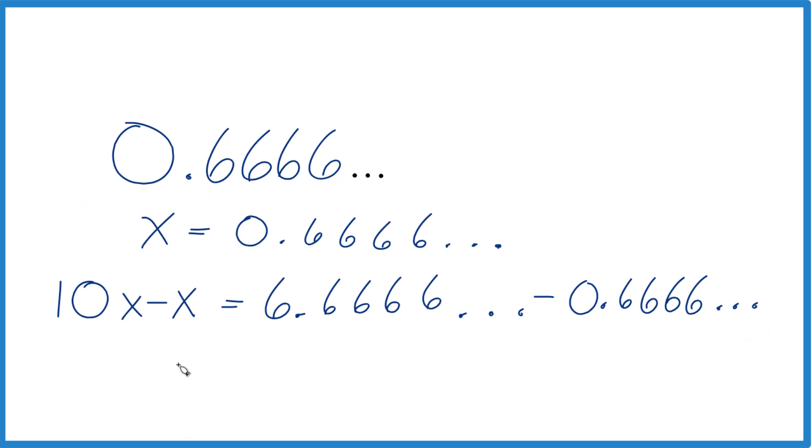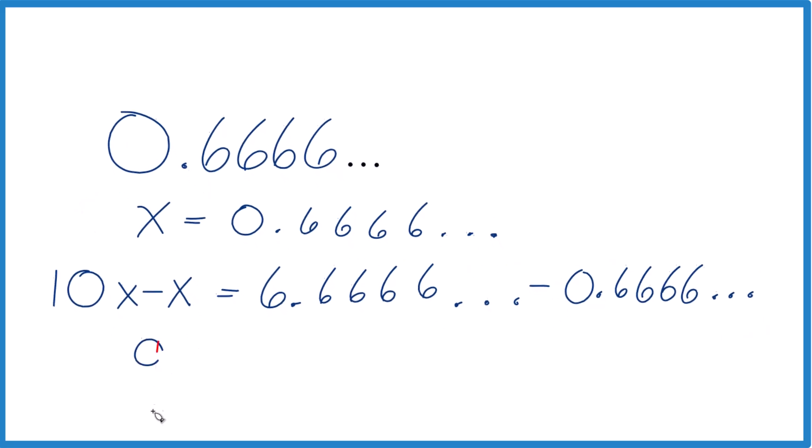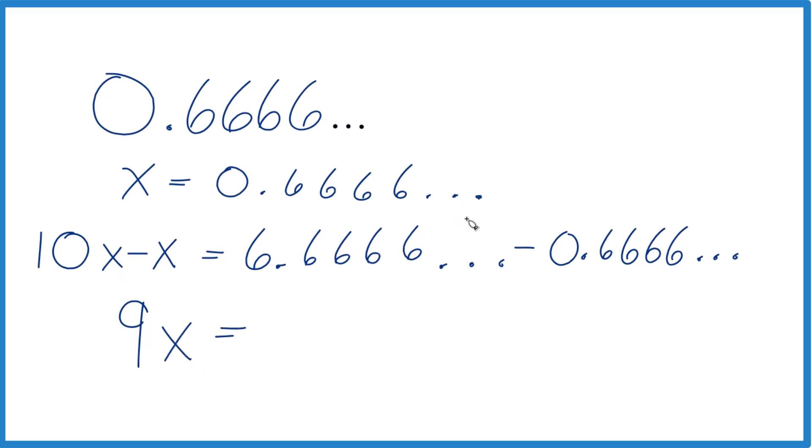So now we have 10x minus x. That's 9x. And that equals this right here. That's the same as this right here. And when we subtract them, we get 0. So they're gone and we're left with 6.